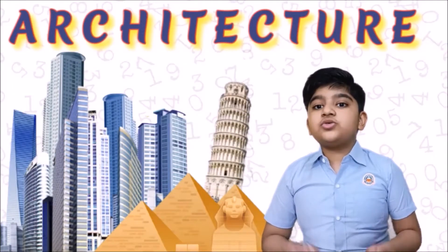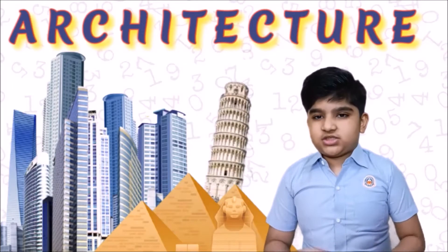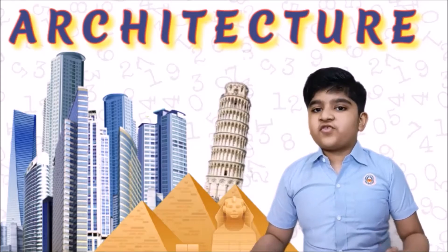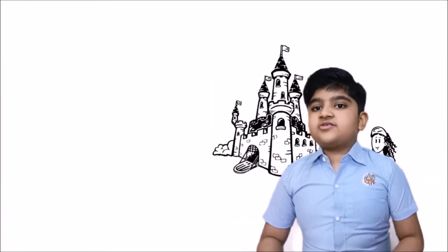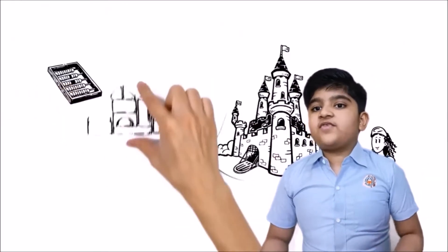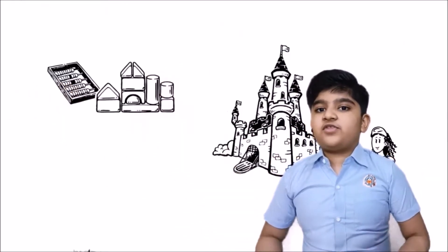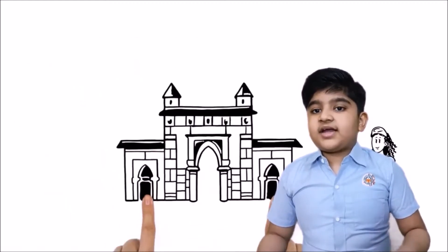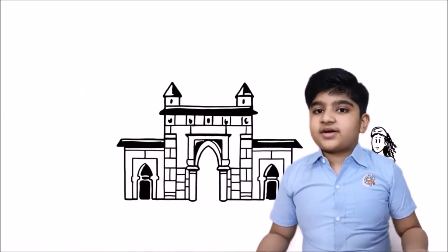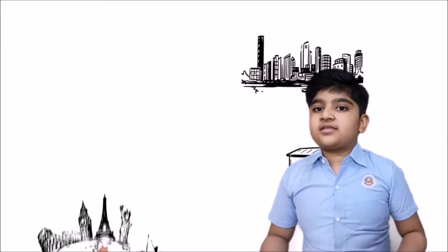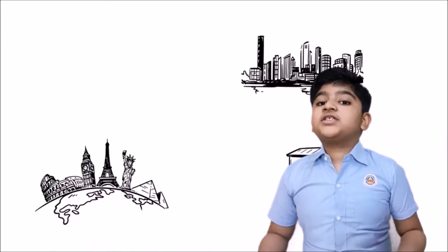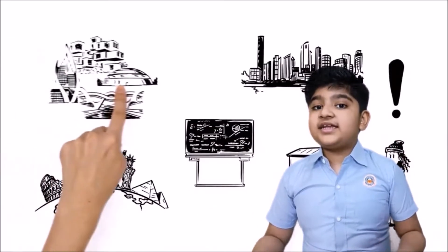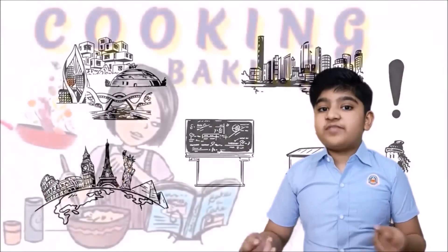Architecture. Architects also use math for construction of different types of buildings. They use geometry to define the shape of the building, measurement, angle, calculating quantities and cost. It is the magic of math that we have 7 wonders of the world like the pyramid and the Leaning Tower of Pisa.